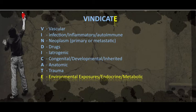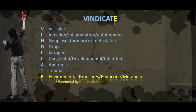E is for environmental exposures, which we covered, as well as endocrine and metabolic causes. Hyperalimentation is the intake of excess nutrients, which is definitely different from breastfeeding jaundice — an exaggeration of physiologic jaundice seen in exclusively breastfed infants not getting enough breast milk. Essentially, it's inadequate enteral intake that increases the enterohepatic circulation and causes jaundice in babies. This is a thorough and complete differential diagnosis for jaundice using the VINDICATE mnemonic.